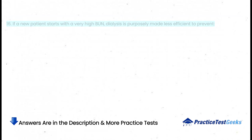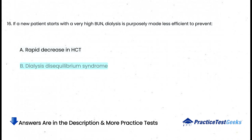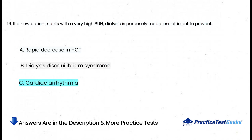If a new patient starts with a very high BUN, dialysis is purposely made less efficient to prevent: a. Rapid decrease in HCT, b. Dialysis disequilibrium syndrome, c. Cardiac arrhythmia, d. Excessive coagulation.